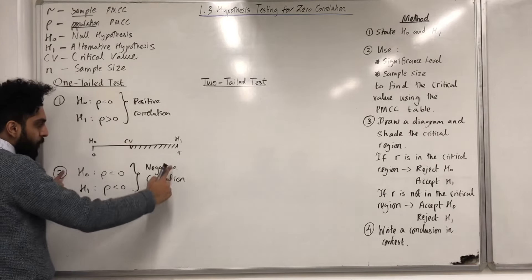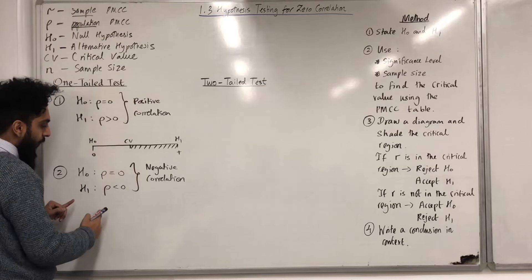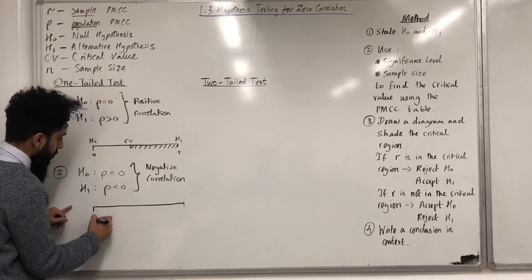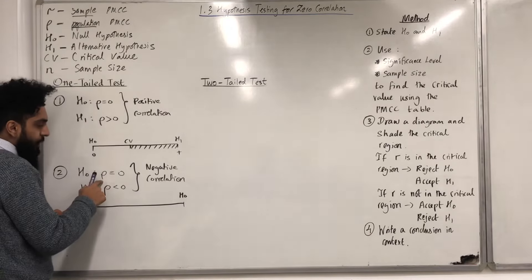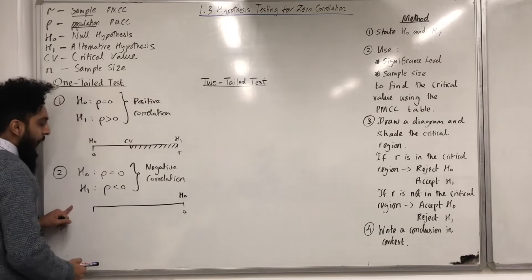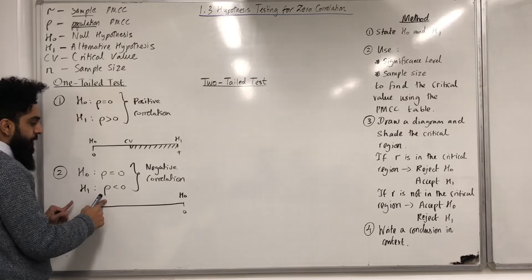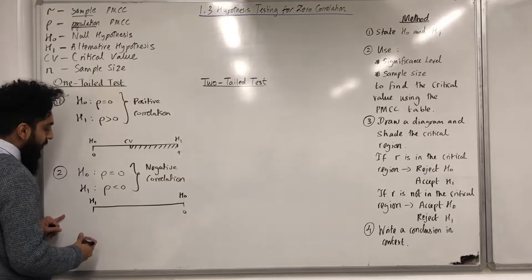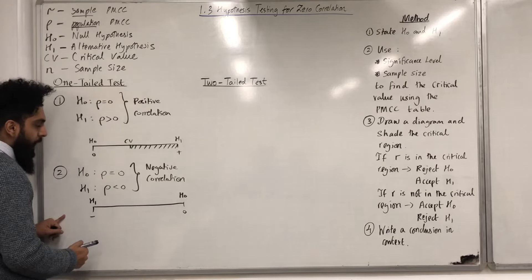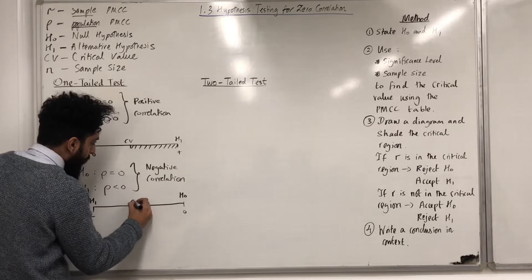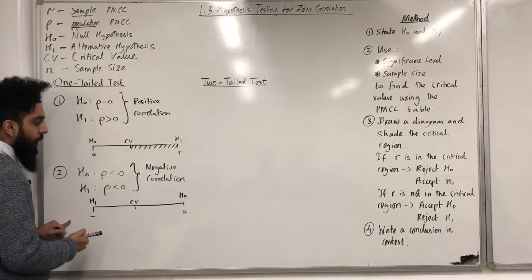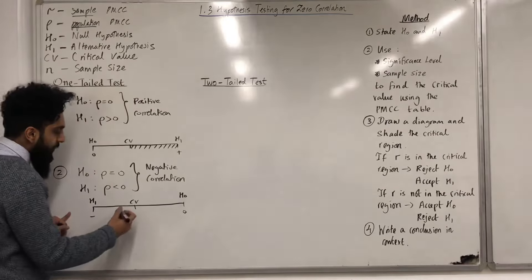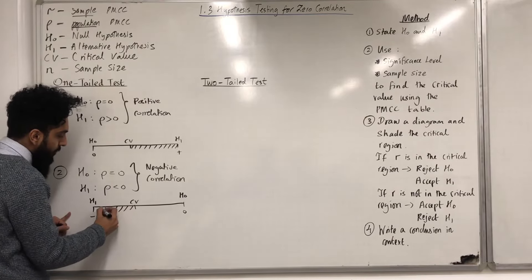Again, we can model this situation using a diagram. H0 represents rho equal to zero, so I can put a zero here. H1 represents rho less than zero — in other words, a negative value — so I can put a minus here. The CV sits in the middle. Anything that is CV or less represents the critical region, so we can shade in the critical region.